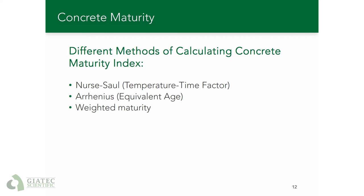There are three different methods of calculating the maturity index. The first two, standardized by ASTM C1074, include the Nurse-Saul equation (or temperature time factor) and the equivalent age based on the Arrhenius equation. The third one is called weighted maturity and is based on a Dutch standard adopted in some European countries. The maturity index — whether represented by temperature time factor, equivalent age, or weighted maturity — is correlated with strength using the same general equation. Note that we only provide a summary here, so you should review full standard specifications before using these methods in the field.